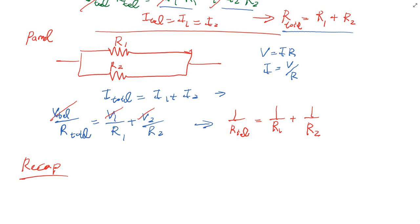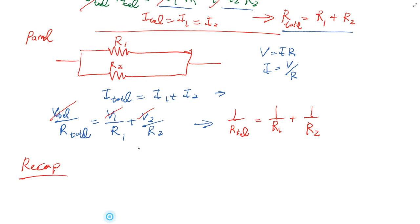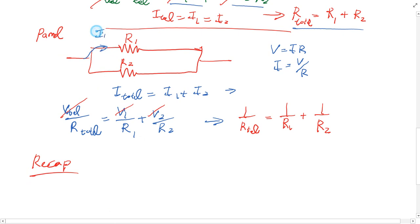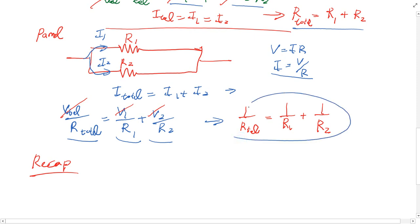For parallel circuits, I total equals I1 plus I2 — the current splits. Some goes up (I1) and some goes down (I2). Instead of I, we can use V over R from Ohm's Law. Substituting into the equation gives: V_total over R_total equals V1 over R1 plus V2 over R2. Since voltage is the same, the V's cancel and you get: 1 over R_total equals 1 over R1 plus 1 over R2.